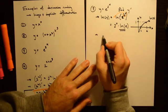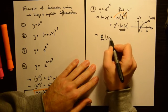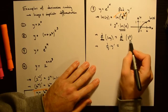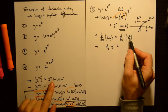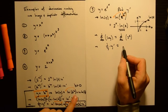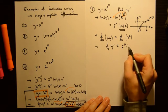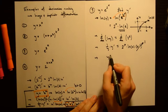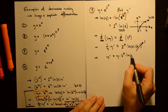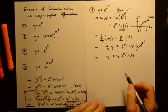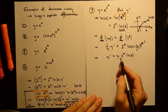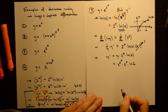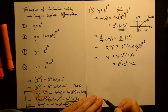Taking the derivative of both sides with respect to x: d/dx of ln(y) gives 1 over y times y prime, and d/dx of 2 to the x gives 2 to the x times the natural log of 2 times x prime, which equals 2 to the x times ln(2). Multiplying both sides by y and back-substituting y equals e to the (2 to the x), we get y prime equals e to the (2 to the x) times 2 to the x times the natural log of 2. No simplification is possible since the bases are different.